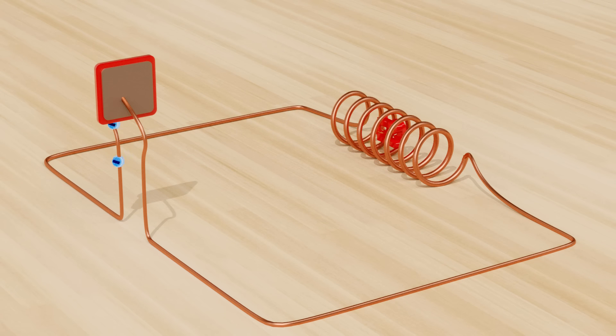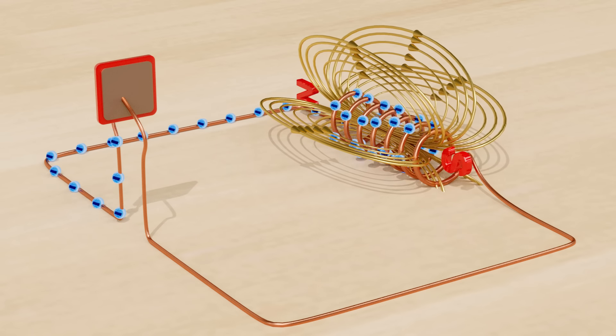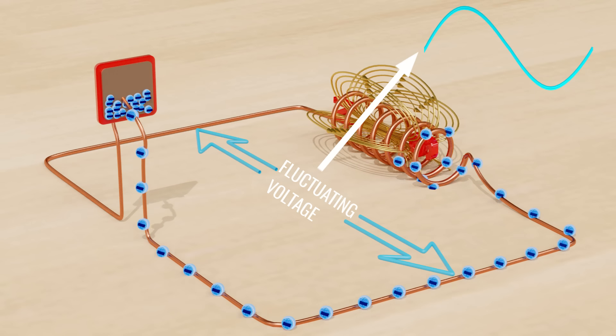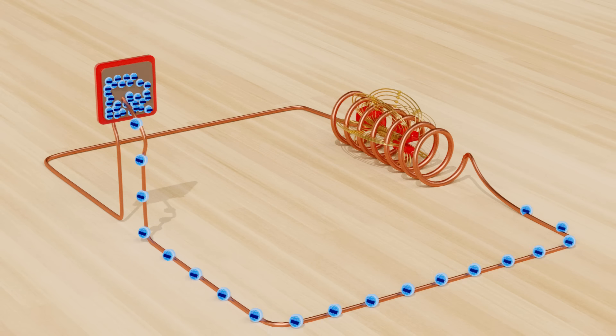You can see a fluctuating electron flow occurs in the circuit. This means the voltage in the circuit will also oscillate as shown. Assume the peak voltage of the LC circuit is more than the voltage applied across the thyristor.